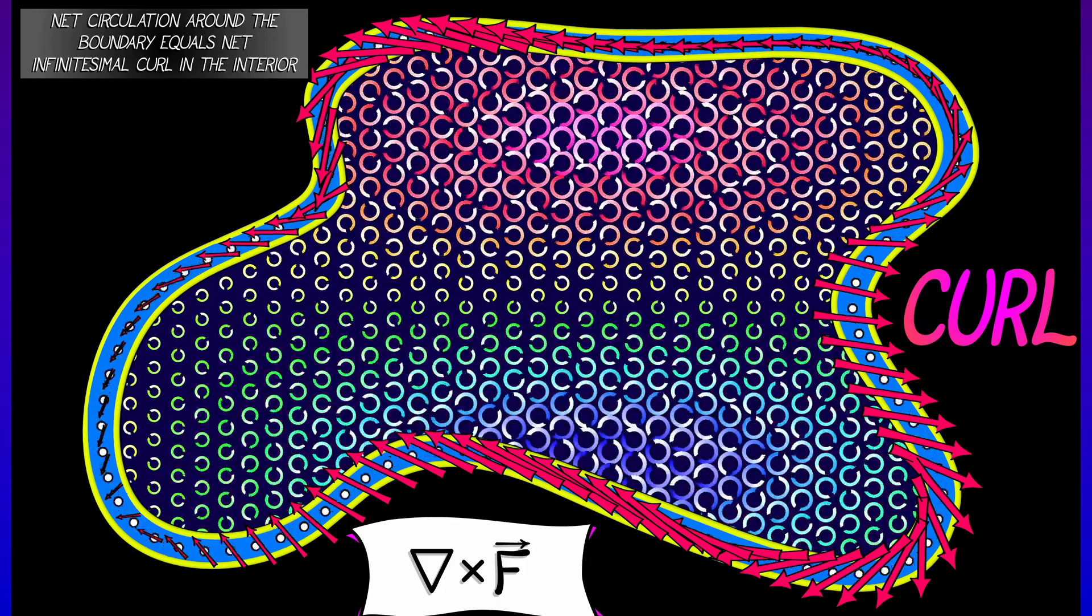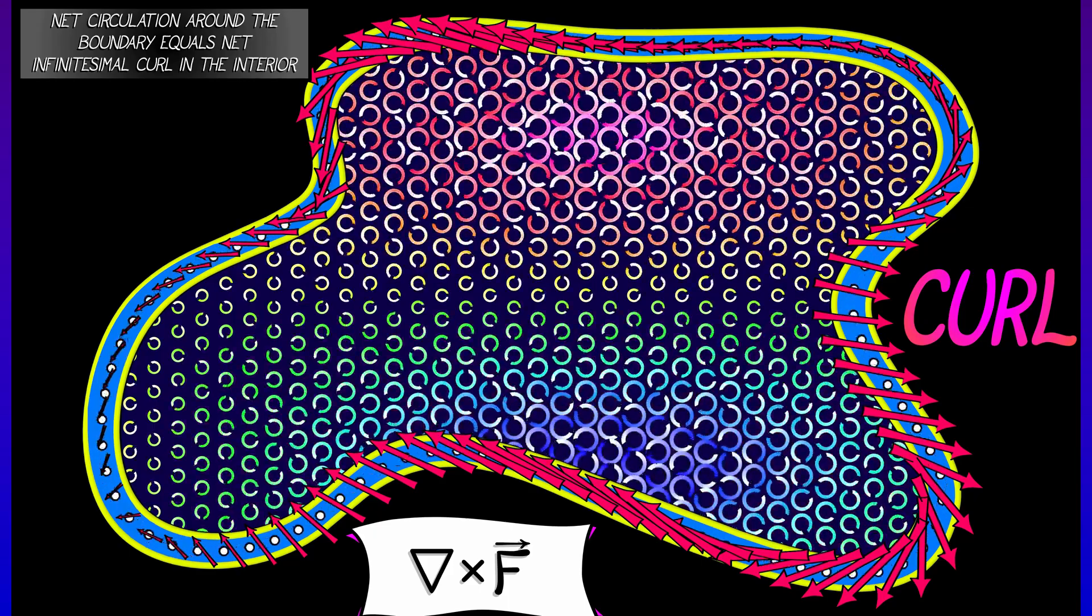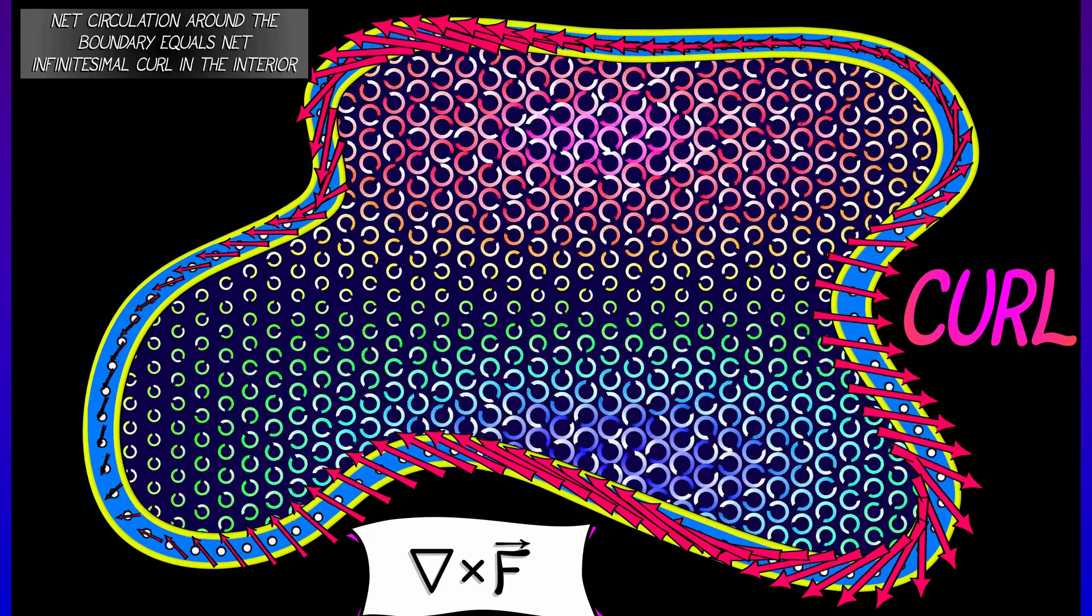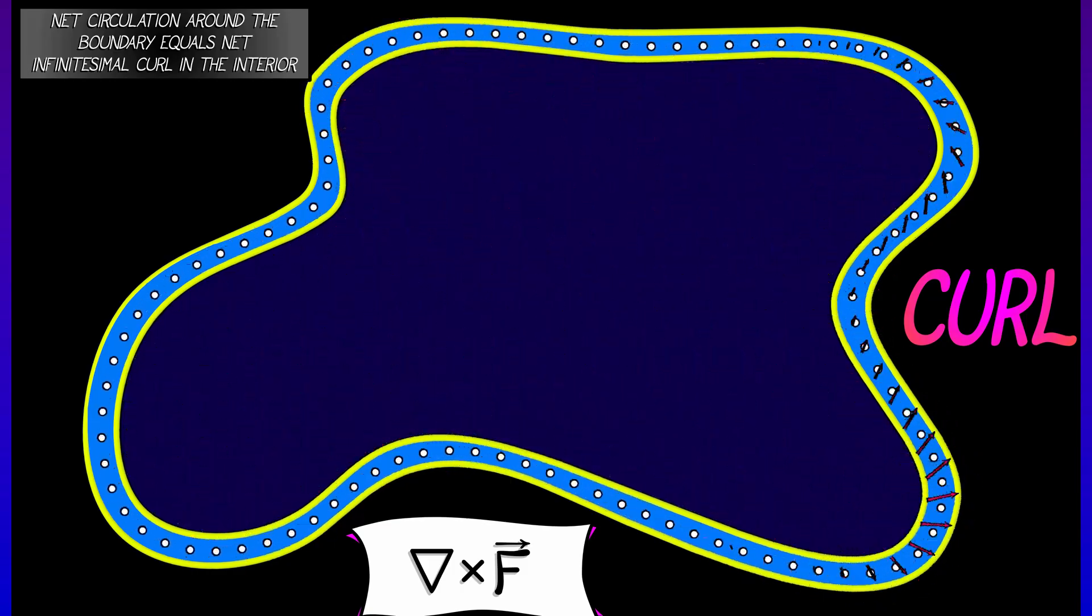Whereas clockwise spin, negative curl density, is contributing to negative circulation along the boundary. That is the interpretation of Green's theorem with respect to curl.